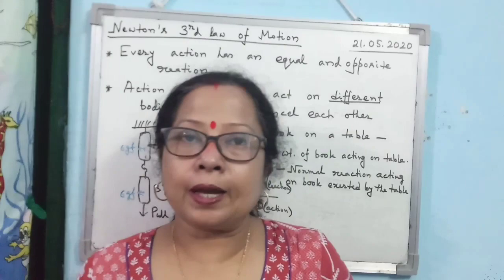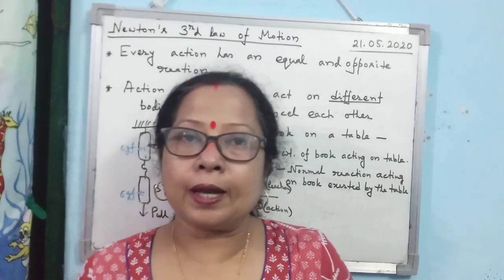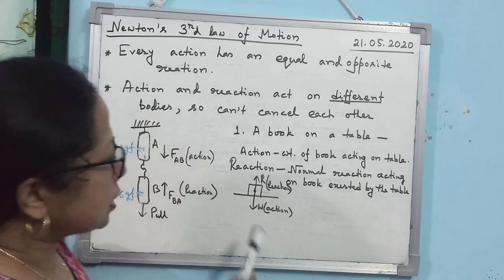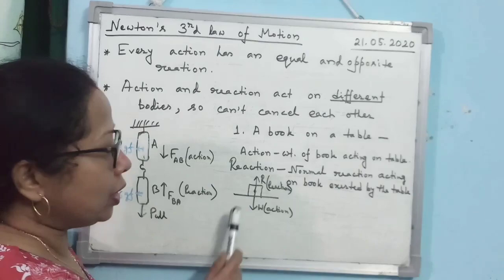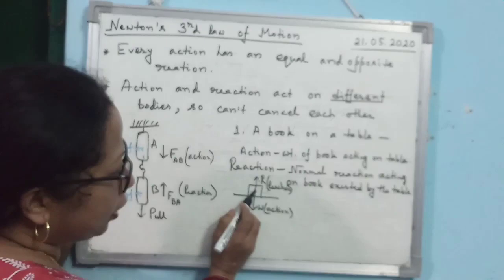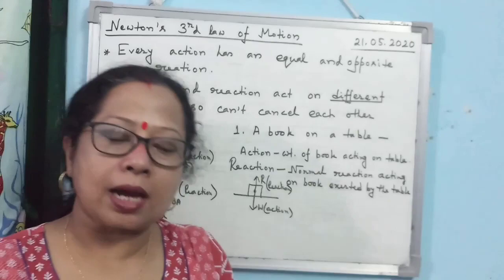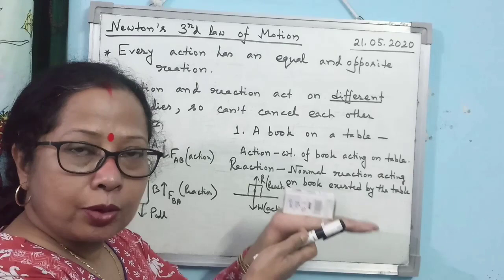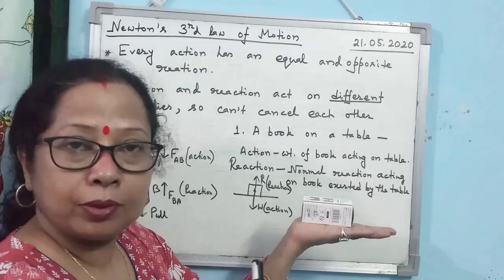Regarding Newton's third law of motion, the most important thing is that you have to identify which one is action and which one is reaction. Let us consider this one. Suppose you have kept a book on the table. Then you see the weight of the book — it is acting downward and it is acting on the table. Just consider instead of book and table: suppose you are carrying a heavy object on your palm. You can feel it because the weight of the object is acting on your palm. So, the weight of the object that is acting on your palm — that is action, acting in the downward direction.